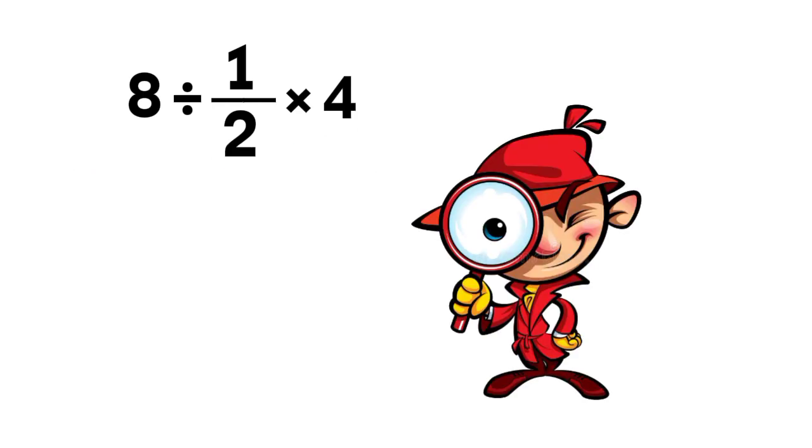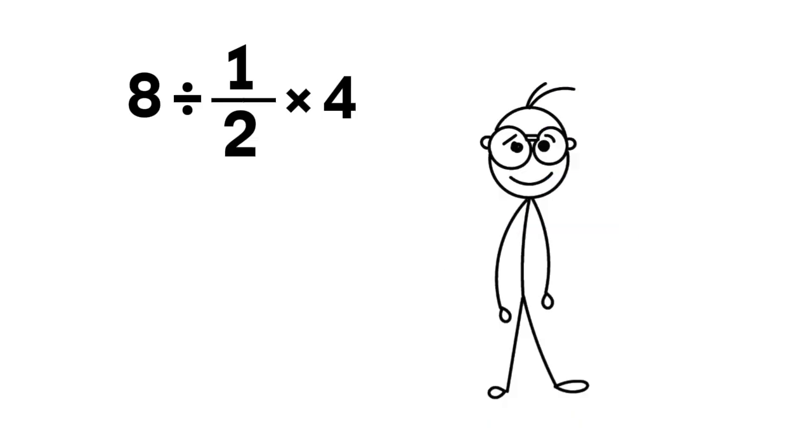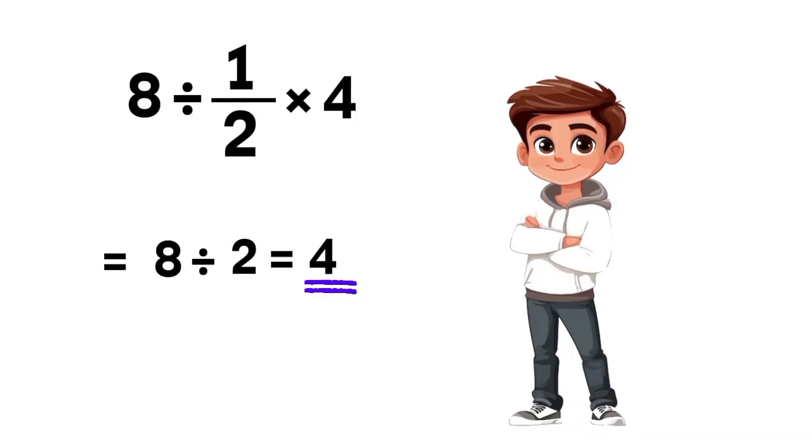Now, take a look at it carefully for a second. At first glance, it might seem pretty simple, right? Some people might quickly say, oh, 1 over 2 times 4 gives us 4 over 2, which equals 2. Then 8 divided by 2 equals 4. So they confidently write down 4 as the answer.